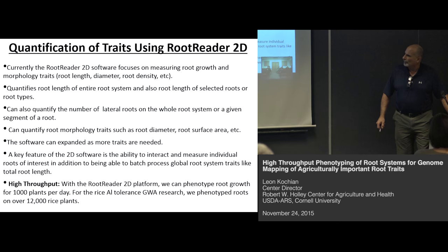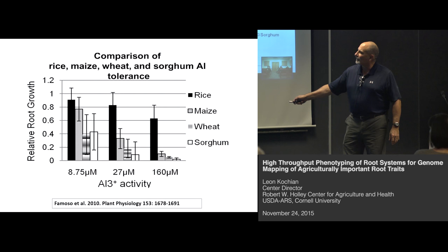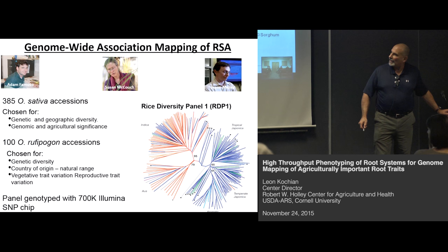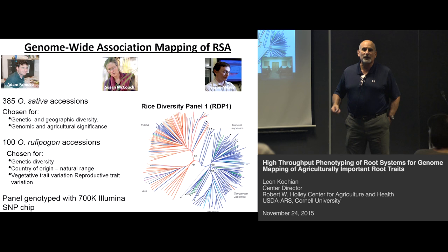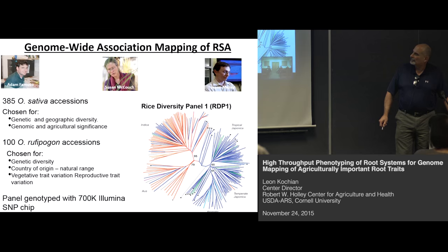We measure relative root growth, which is root growth in aluminum solution divided by control root growth. Looking at different cereals at three different Al³⁺ activities — even at 160 micromolar activity, which in this solution was about one millimolar aluminum — rice is much more aluminum tolerant than the other cereals, with a relative root growth of about 60% at the high level. Using this system in collaboration with Susan and Jason Meese on the statistical side, Adam and Randy phenotyped Susan's initial rice diversity panel RDP1, which had about 400 domestic rice lines.